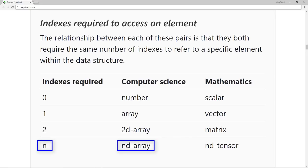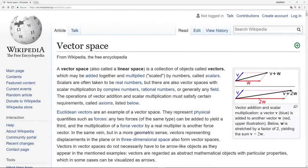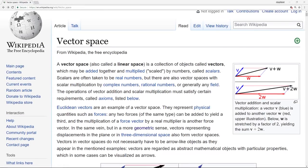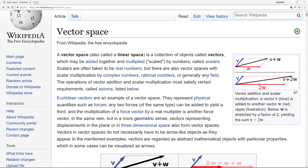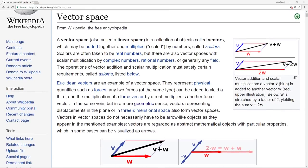Tensors allow us to drop these specific terms and just use an n to identify the number of dimensions we are working with. One thing to note about the dimension of a tensor is that it differs from what we mean when we refer to the dimension of, say, a vector in a vector space. The dimension of a tensor does not tell us how many components exist within the tensor.